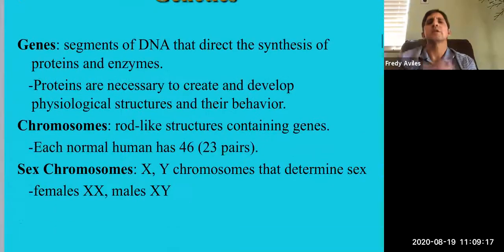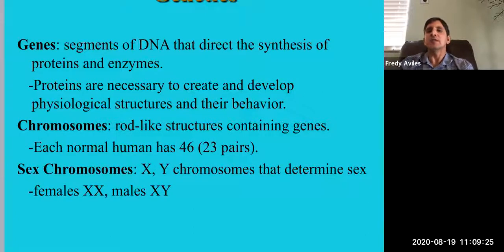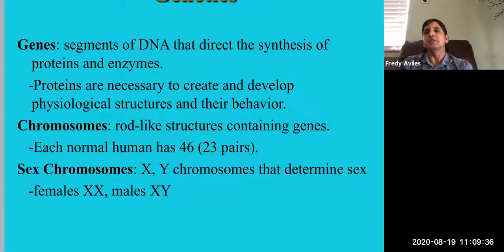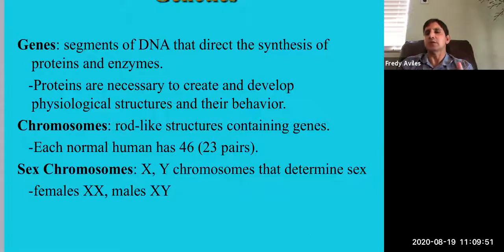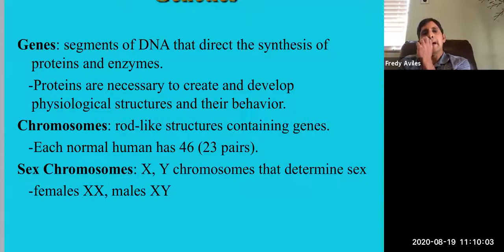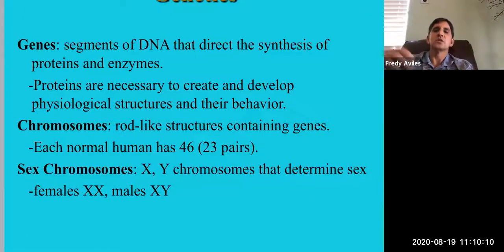DNA is contained in genes, so it's a matter of degrees. DNA is the chemical information from those four base pairs. Genes are segments — basically a section of that information — that direct the synthesis of proteins and enzymes. A gene is like a piece of instructions, a set of blueprints for something specific. Genes can be turned on or off, and proteins are necessary to create and develop physiological structures and their behaviors.